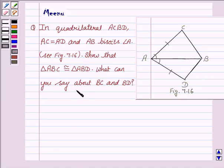What can you say about BC and BD? So the key idea behind this question is we will be using SAS congruence criteria. So this is the key idea.